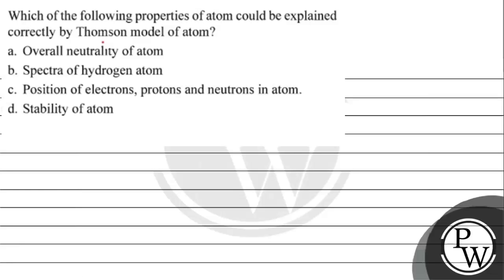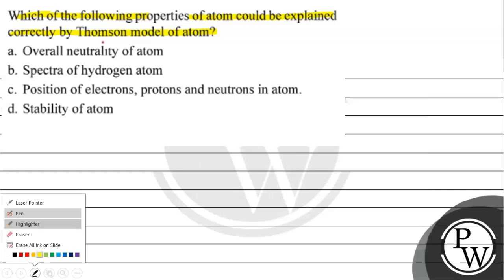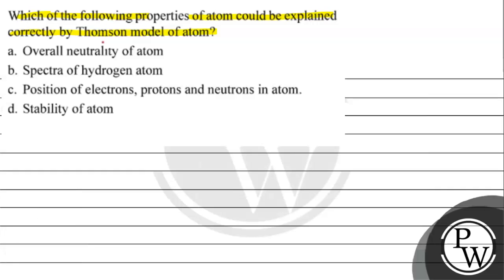Let's read this question. Which of the following properties of atom could be explained correctly by Thompson's model of atom? Option A: overall neutrality of atom. Option B: spectra of hydrogen atom. Option C: position of electrons, protons, neutrons in atom. Option D: stability of atom.